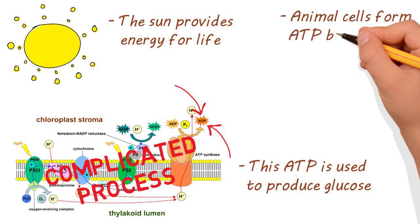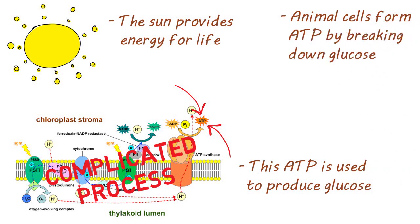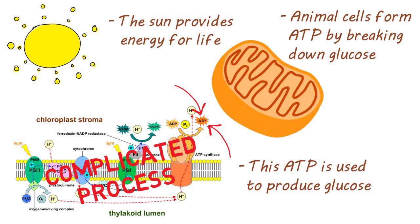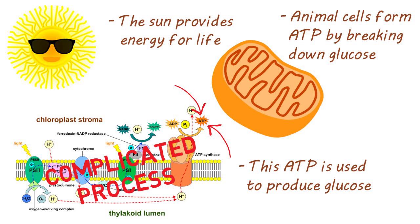Animal cells form ATP by breaking down glucose in glycolysis and cellular respiration. Most of this takes place in the mitochondria. So the energy your body uses every day literally came from the sun. Pretty rad, huh?